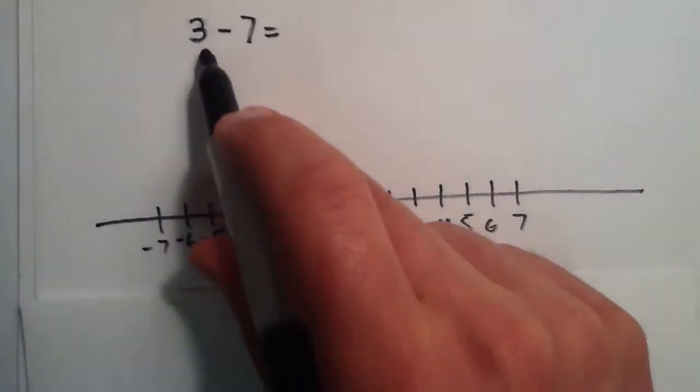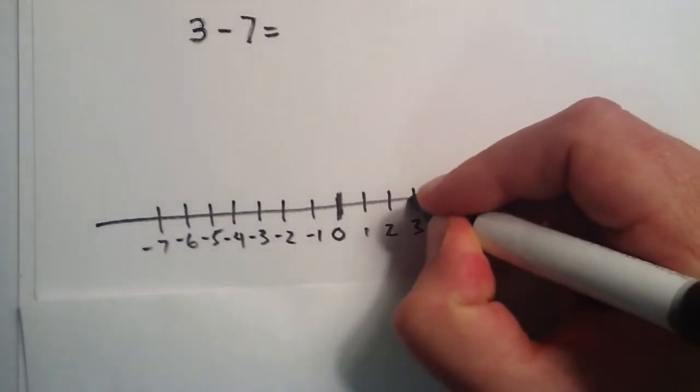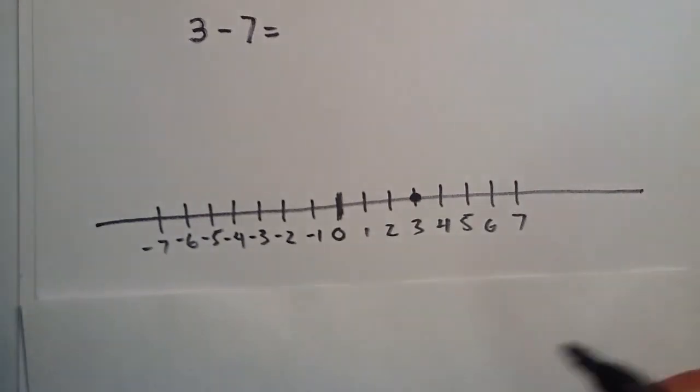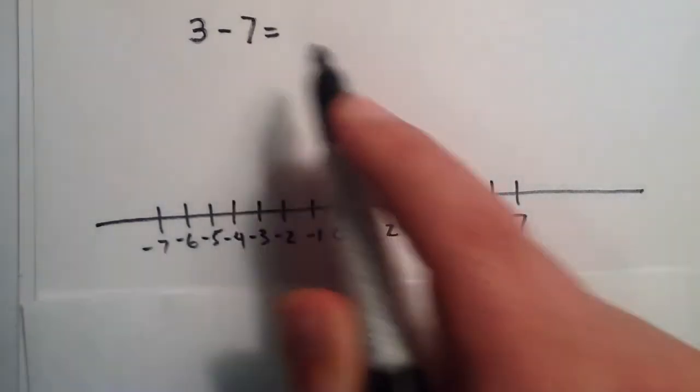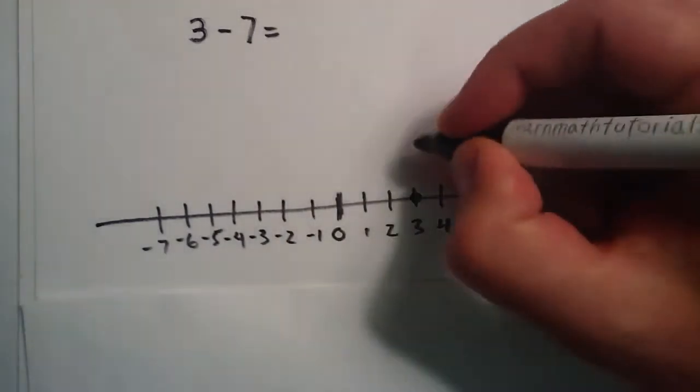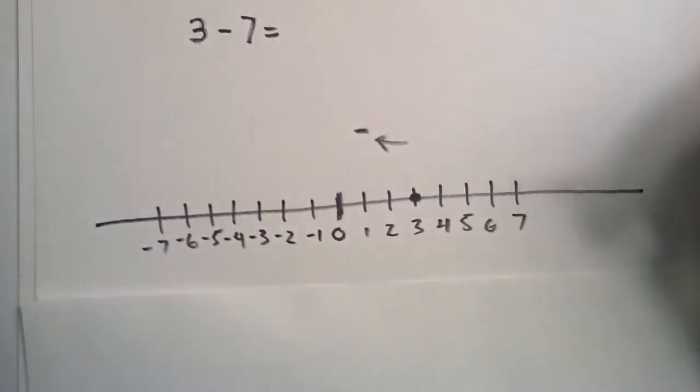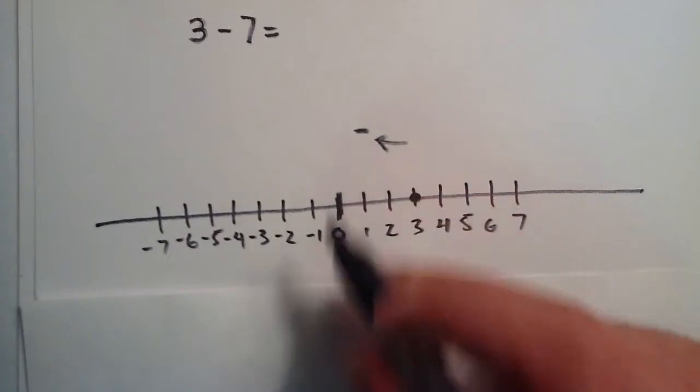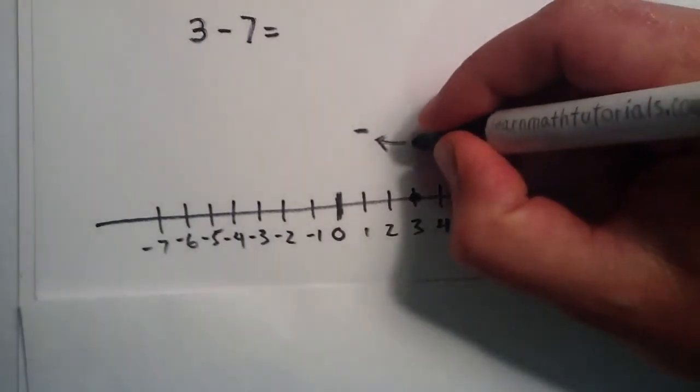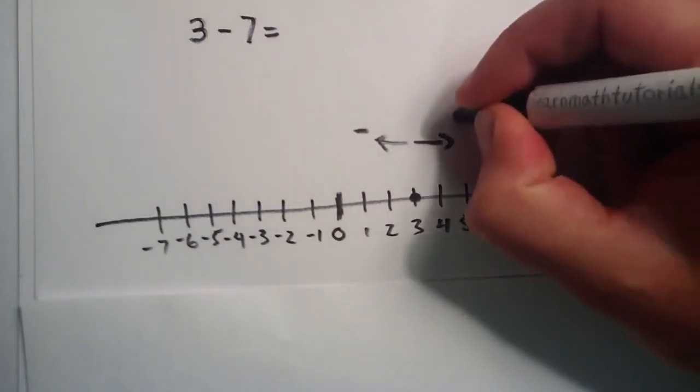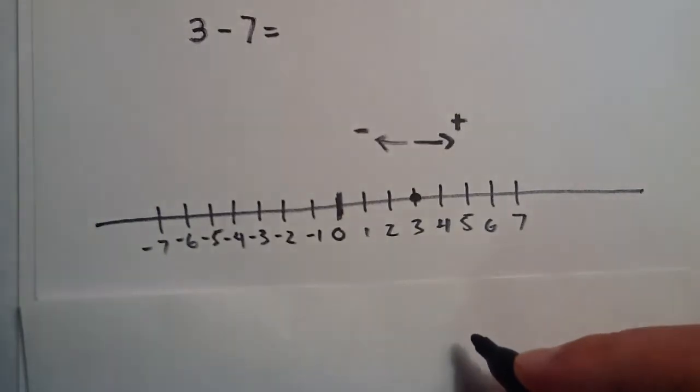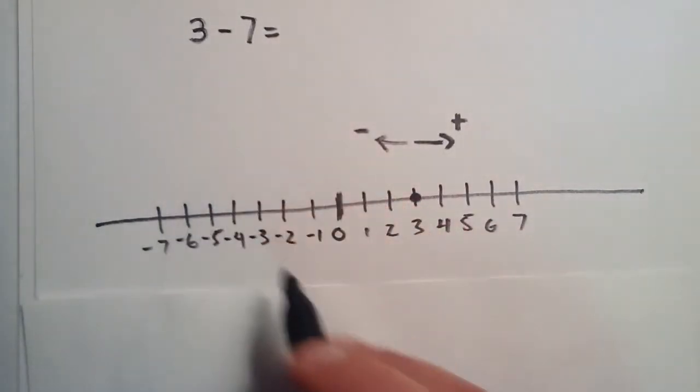So if we start with 3, we're right here. We have this many dollars, $3. And we want to take away 7. So if you think taking away on a number line, you're thinking subtraction and you're thinking moving to the left. And adding on a number line, you're thinking addition or moving to the right. This time we're subtracting, because of the negative sign.